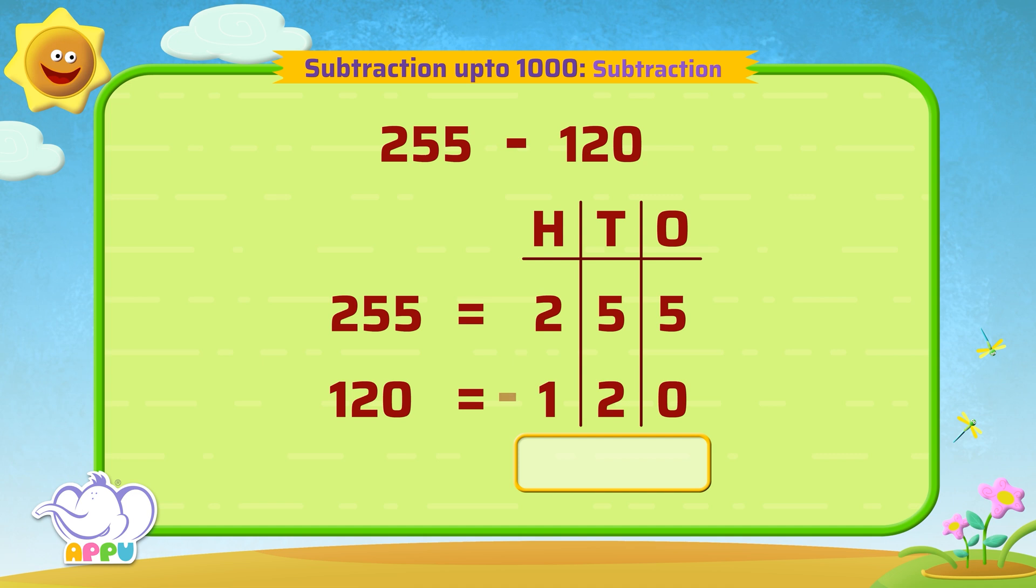Now we subtract the ones. Five minus zero equals five.